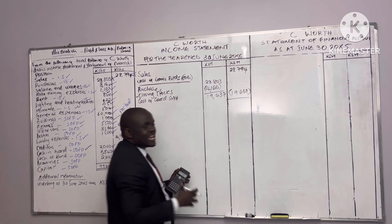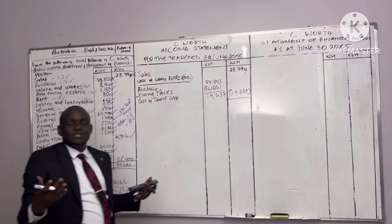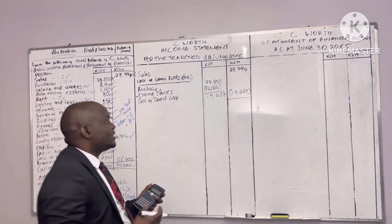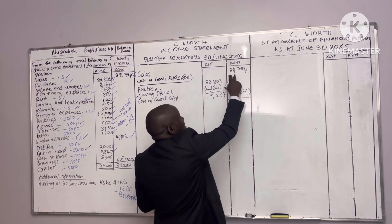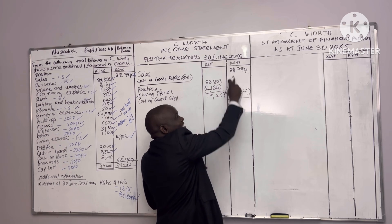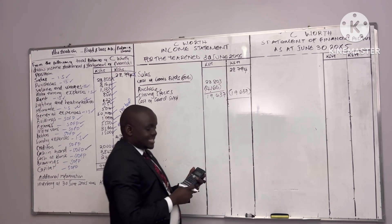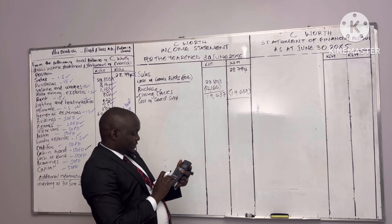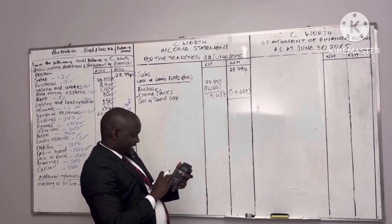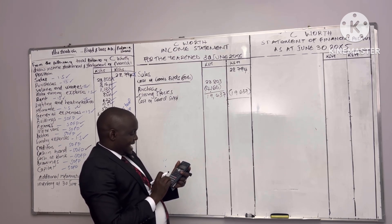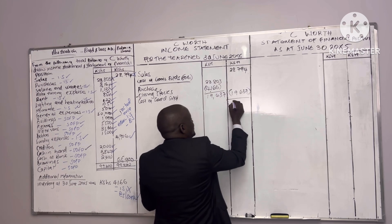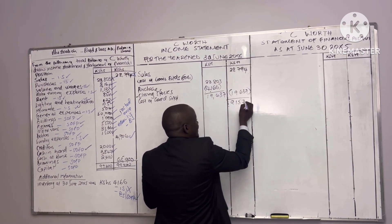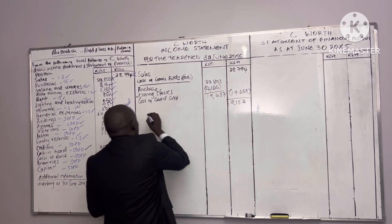So 19,637 is the cost of what it cost me to sell these goods. I sold them at 28,794 but it cost me 19,637, so the difference is the gross profit. 28,794 minus 19,637 gives a gross profit of 9,157.